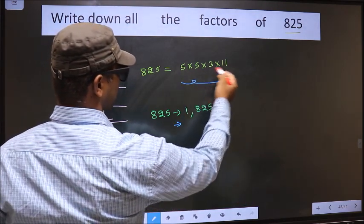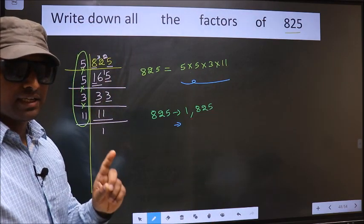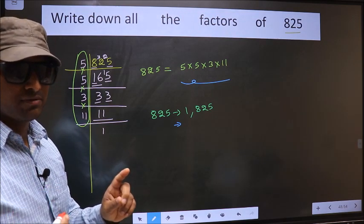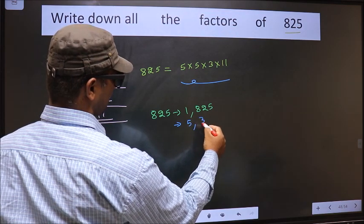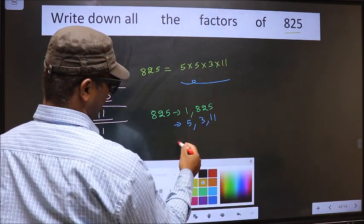Now from these numbers, you select one different number at a time. Like that, how many numbers do we get? We get 5, 3, and 11. That's it. Next.